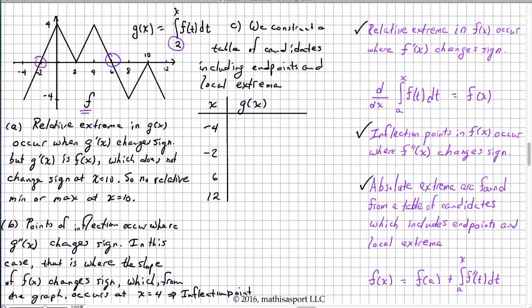Why X equals 2? Because that's where G of X equals 0 — that's the initial condition given. The fundamental theorem states that to find the value of a function at a given point, you need a starting point plus the integral, or signed area, underneath the derivative curve. So starting at X equals 2, going forward to 6: G of 6 equals G of 2 plus the signed area from 2 to 6, which is a triangle with area one-half times base 4 times height 4, giving a value of 8.